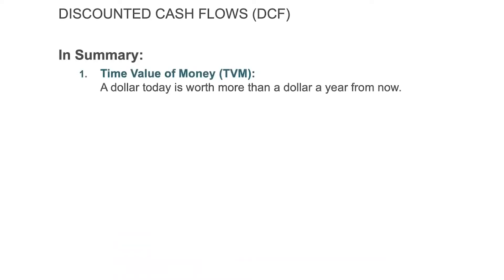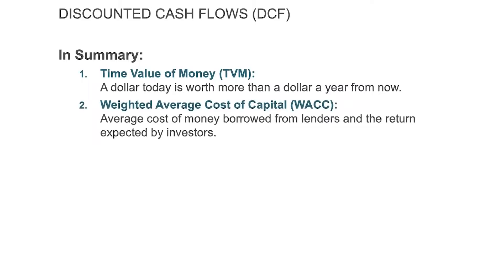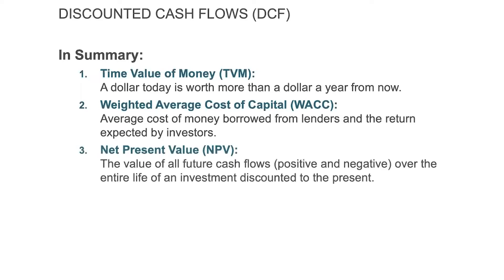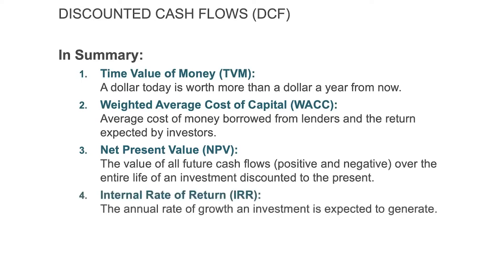Let me summarize the key principles you should take away. Number one, remember that a dollar today is worth more than a dollar a year from now — we call that time value of money. Number two, it costs you to use your investment dollars — we call that the weighted average cost of capital, so make sure your investments return more than that. Net present value: if positive, your return is greater than the hurdle rate; if negative, it's less. And finally, the internal rate of return gives you the actual return you're getting on the investment. That is the discounted cash flows methodology — a methodology many companies use to determine their investment dollars.